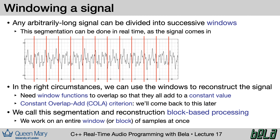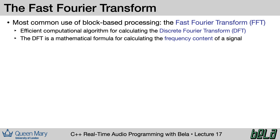To summarize our terminology, block-based processing refers to the segmentation of our signal into successive windows which we then process one window at a time. By far the most common reason to do so is to use something called the fast Fourier transform, or FFT. The FFT is a computational algorithm which efficiently implements a mathematical concept called the discrete Fourier transform, or DFT. The DFT is a tremendously powerful tool to extract the frequency content from a block of samples.